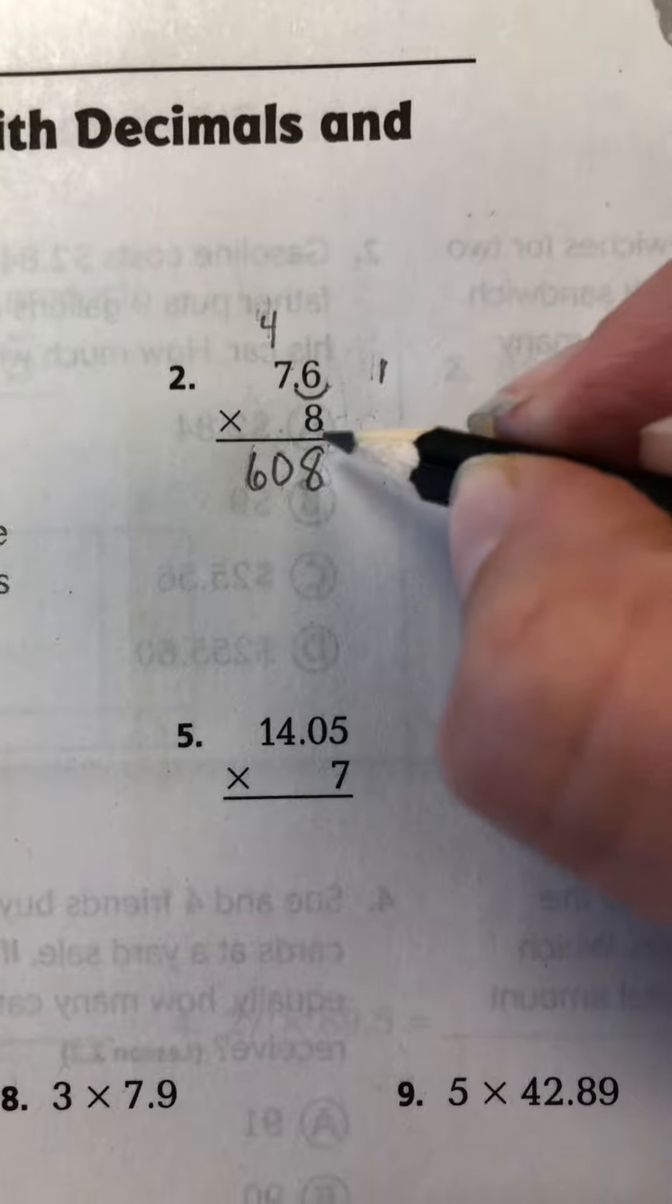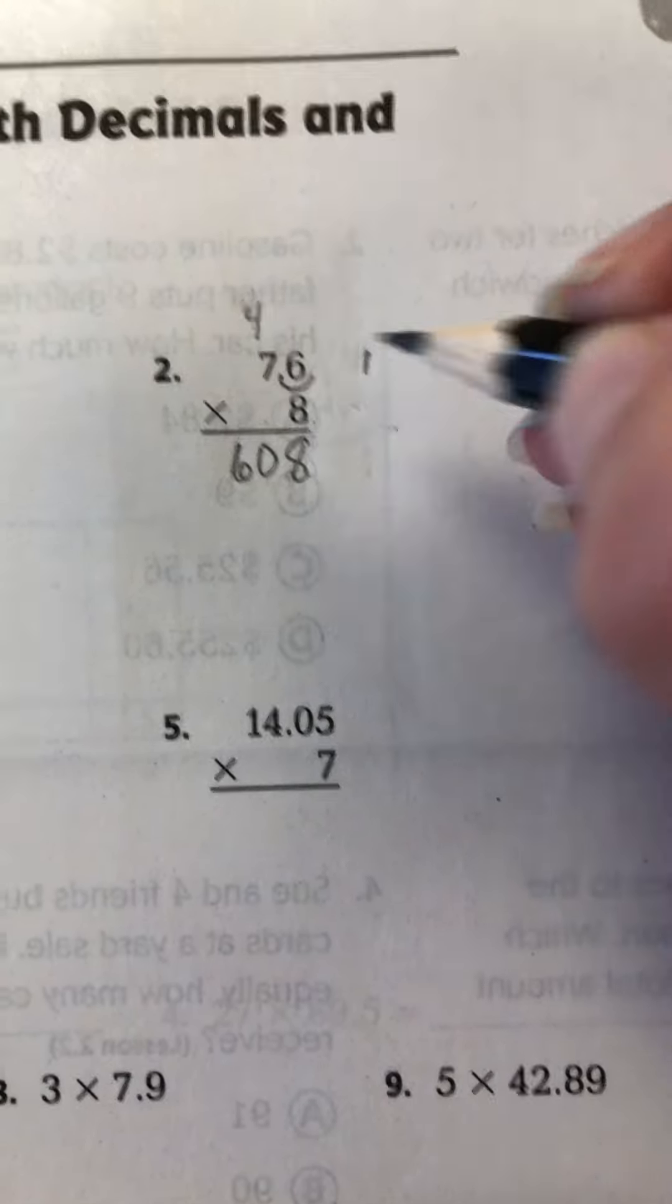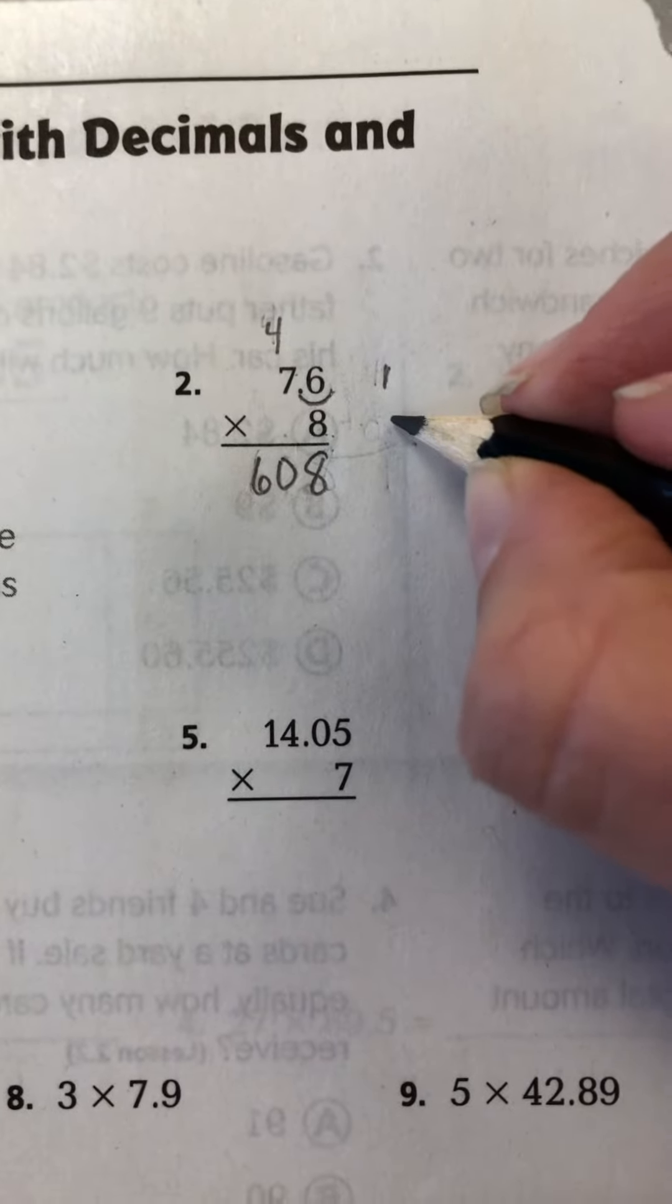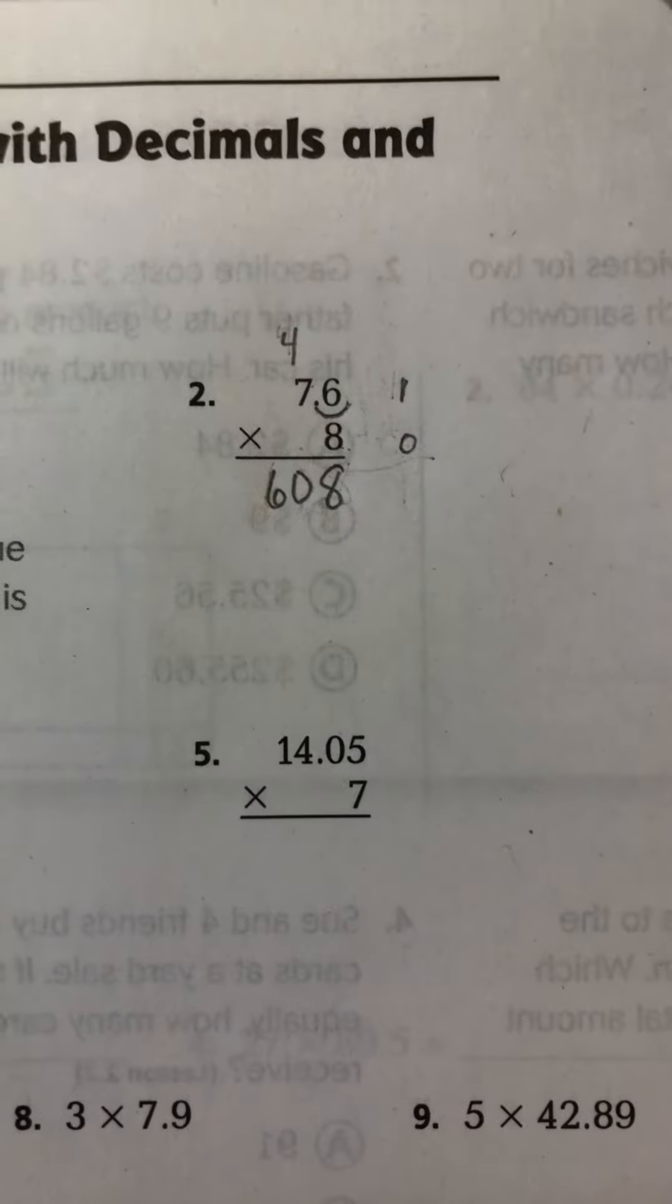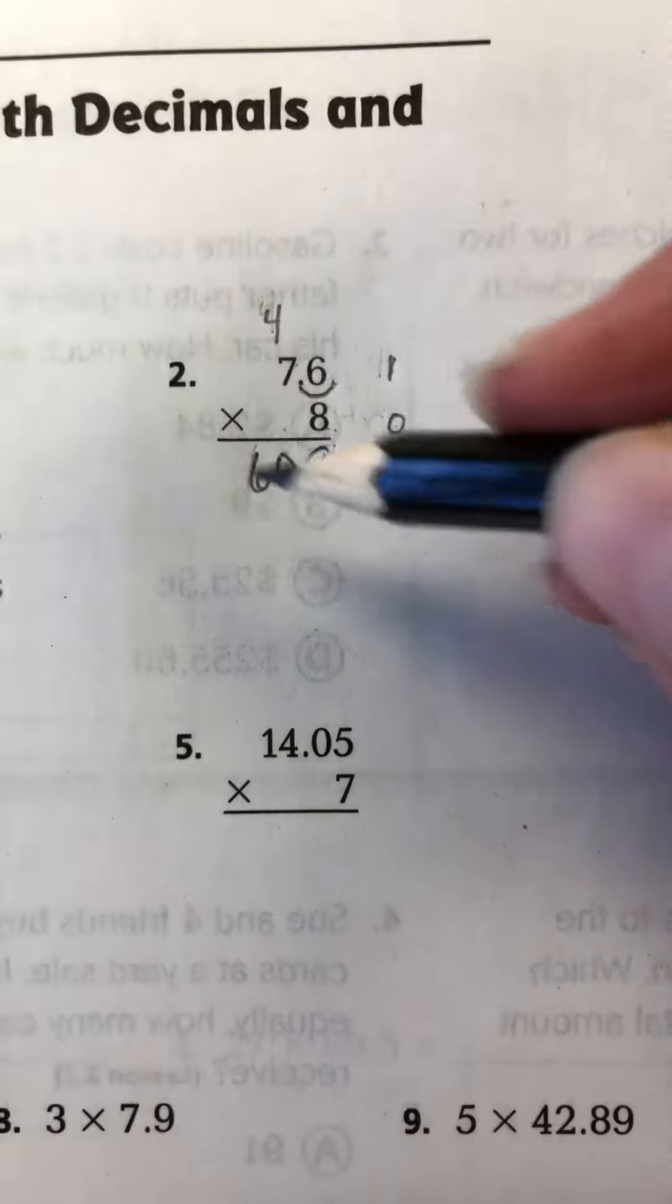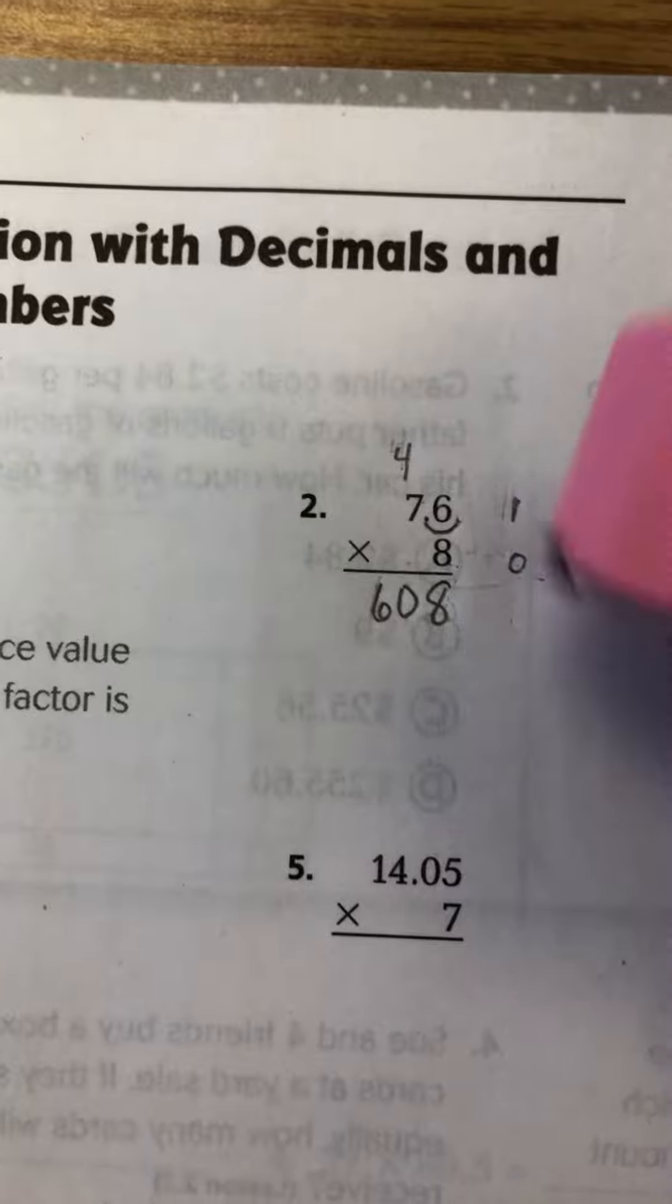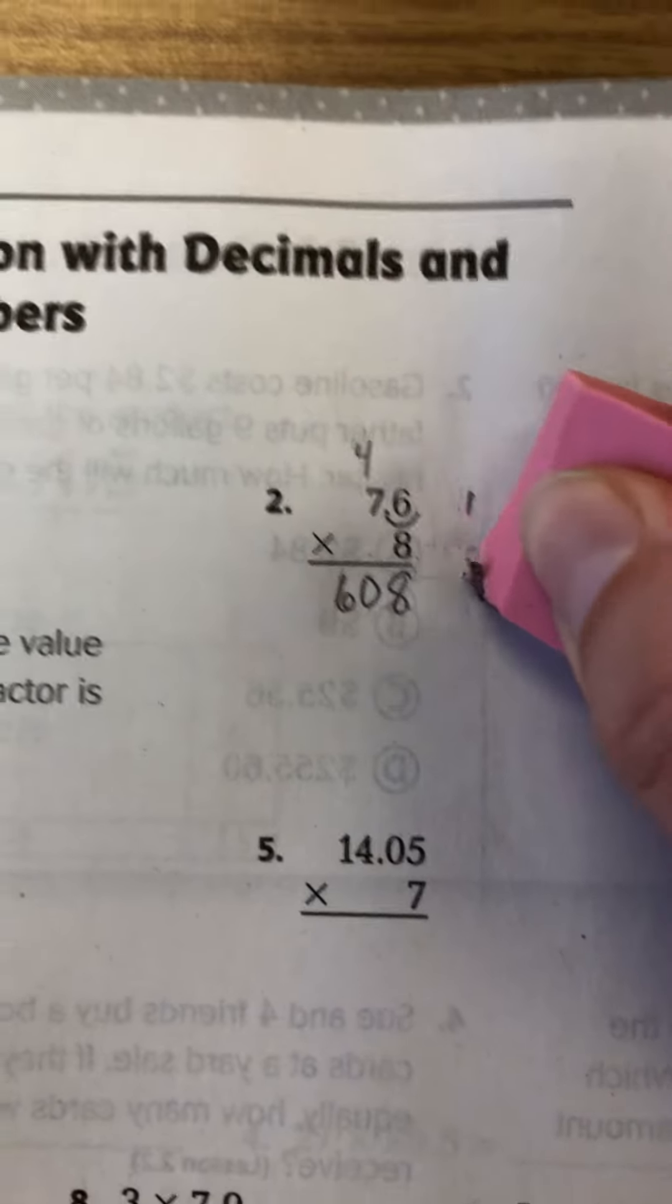All whole numbers actually have an invisible decimal point. And that would be at the end of the number here. In that case, you would say that there are zero digits past the decimal point. But you don't even really have to do that because we do have a whole number there. So I'm going to go ahead and erase that.